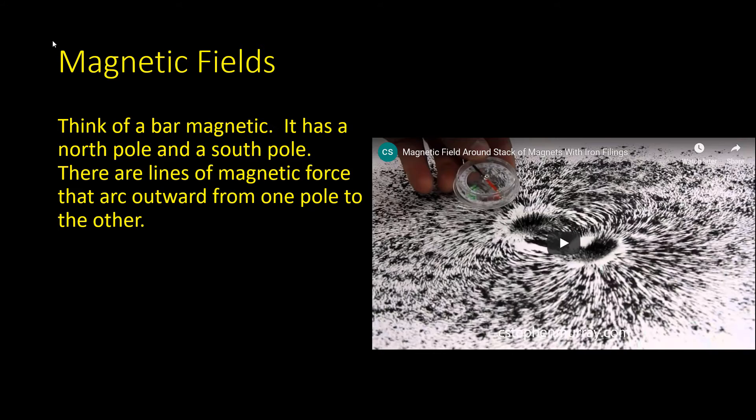First, let's talk about what a magnetic field is, and then we'll step back and look at what causes it. Think of a bar magnet. You know, you have a north pole and a south pole, and lines of magnetic force will arc outward from one to the other. Let's watch this brief video for a good demonstration of magnetic fields.